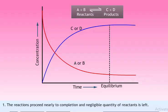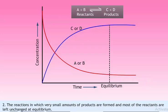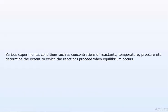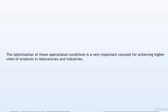Depending on the extent to which chemical reactions proceed, the state of chemical equilibrium can be of three types: reactions that proceed nearly to completion with negligible reactants left; reactions in which very small amounts of products are formed and most reactants are left unchanged at equilibrium; and reactions in which the concentrations of reactants and products are comparable at the equilibrium stage. Various experimental conditions such as concentrations of reactants, temperature, and pressure determine the extent to which reactions proceed when equilibrium occurs.